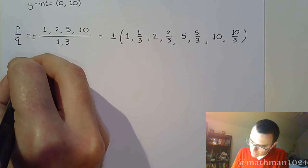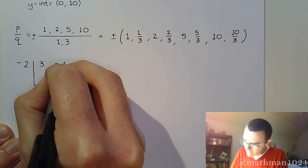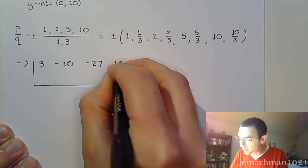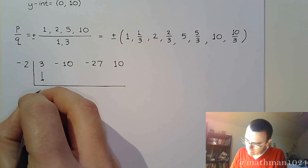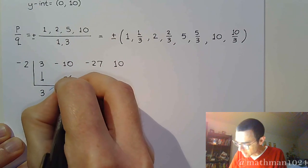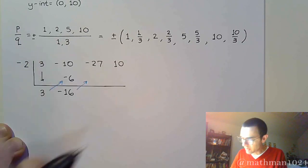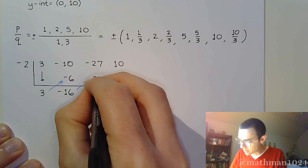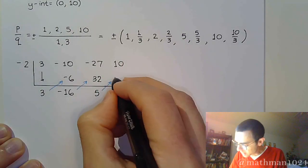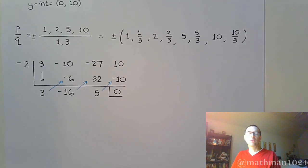Now let's write this up neatly. Using k = -2: bring down 3, times -2 gives -6, combine to get -16, times -2 gives 32, add to get 5, times -2 gives -10, remainder 0. Perfect — this is exactly what we want.